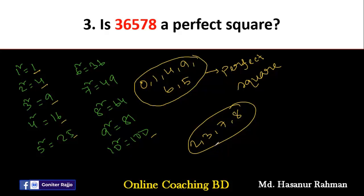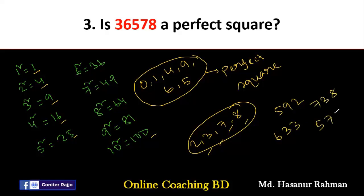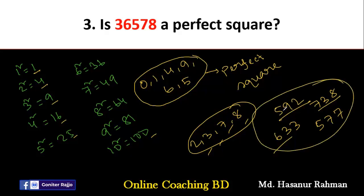For example, 592 is not a perfect square. 633 is not a perfect square. 738 is not a perfect square. 577 is not a perfect square. These numbers end in 2, 3, 7, or 8, so they are not perfect squares. Now look at 36578. The unit digit is 8. Since 8 belongs to the group 2, 3, 7, 8 — 36578 is not a perfect square. The answer is a big no.